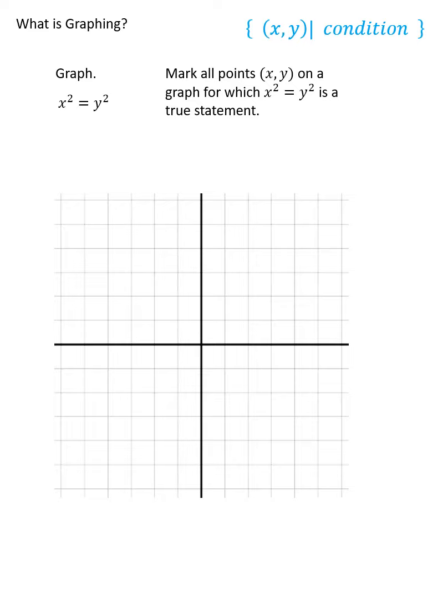Trial and error can be a tremendous help in graphing. For example, I think we all agree that 3² = 3². Nine equals nine after all, right? And so therefore, this graph, whatever it looks like, must contain the point (3, 3). We'll put that right here as usual.